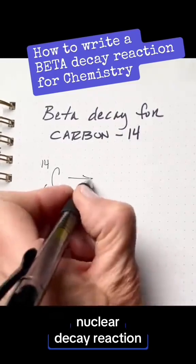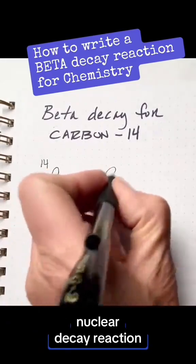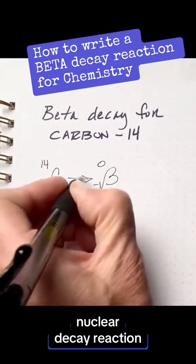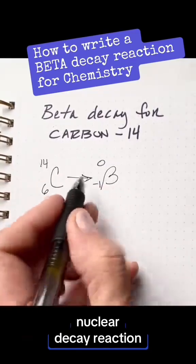Now we're going to decay, we're going to lose a beta particle. Our symbol is a beta with a zero on the top and a negative one on the bottom, and that's very odd, isn't it?